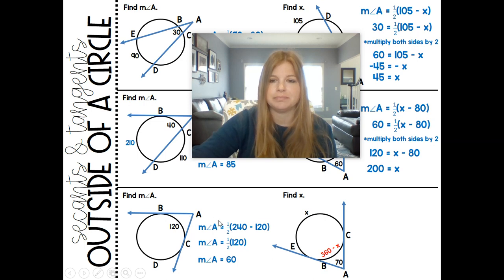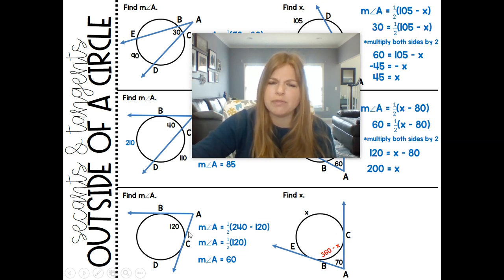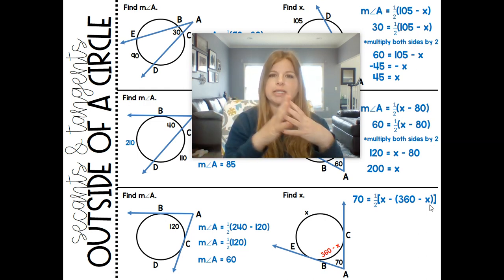Now for this last one, if I want to find x, now here, I know if this is 120, then this has to be 240. But in this case, if I want to find x, what I really need to know is that this little arc here would be 360 minus x. Again, I don't know exactly what this value is. I don't know what any of the arcs are, but if I say to find x, then this segment, this little arc here is 360 minus x. So 70 would be equal to 1 half of the outer arc x minus the inner arc of 360 minus x. And now, so look what's happening here. I'm taking x and I'm subtracting it by this expression of 360 minus x.